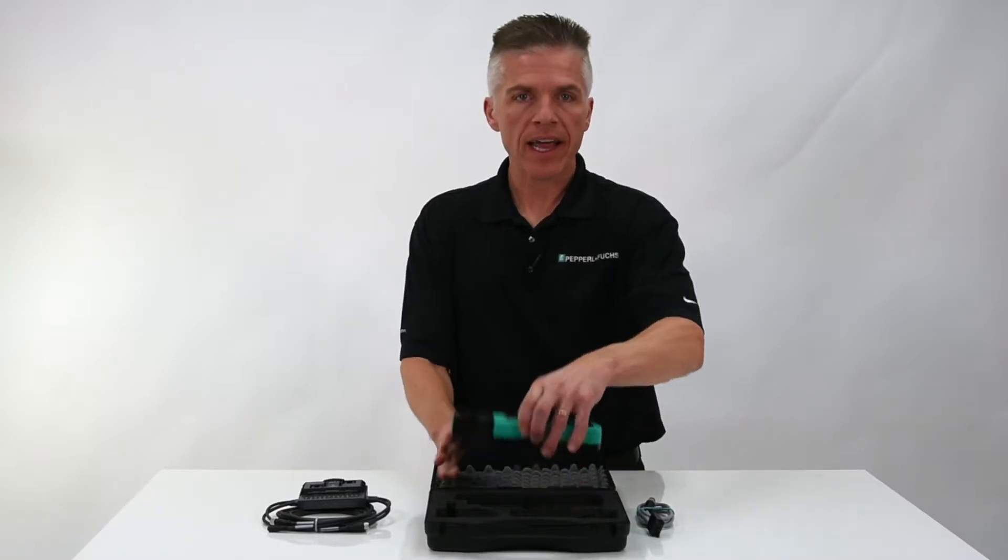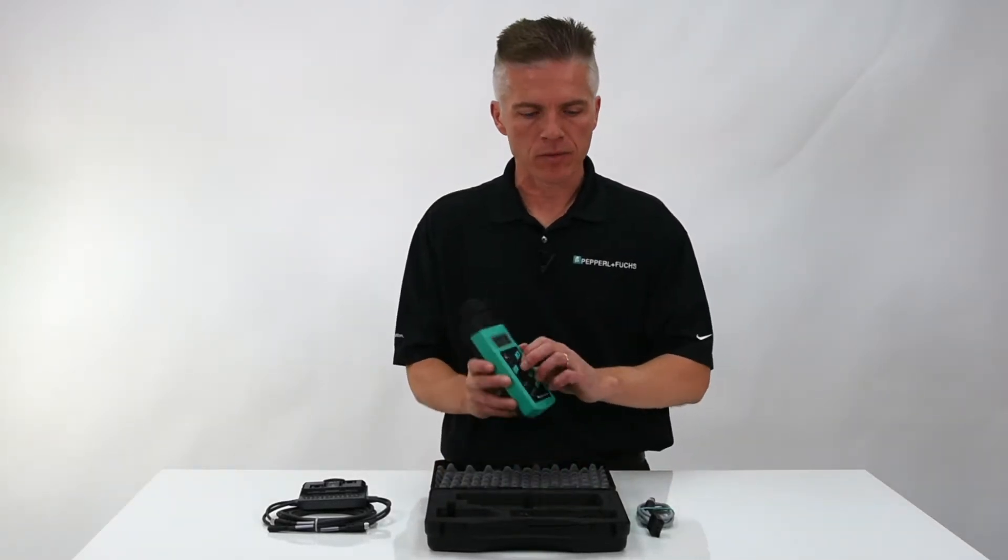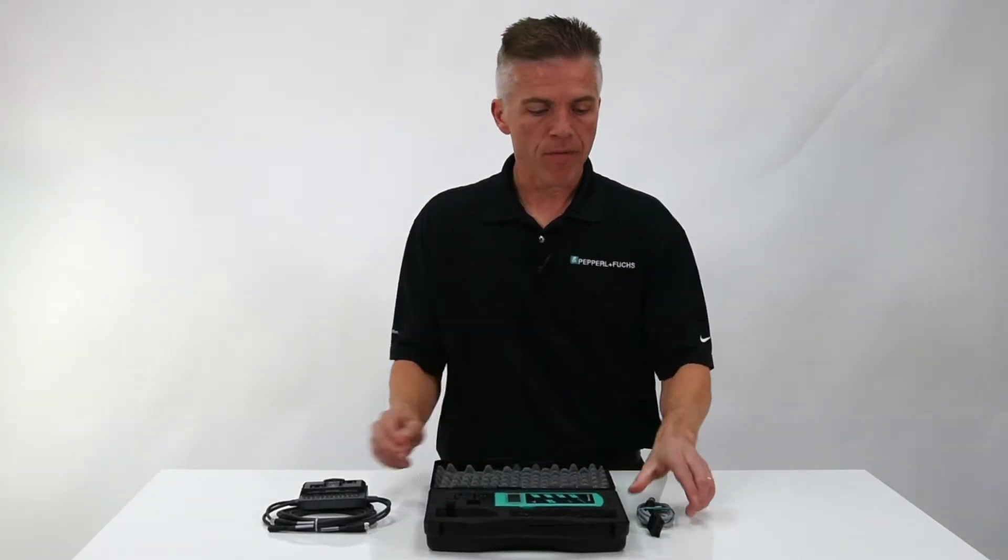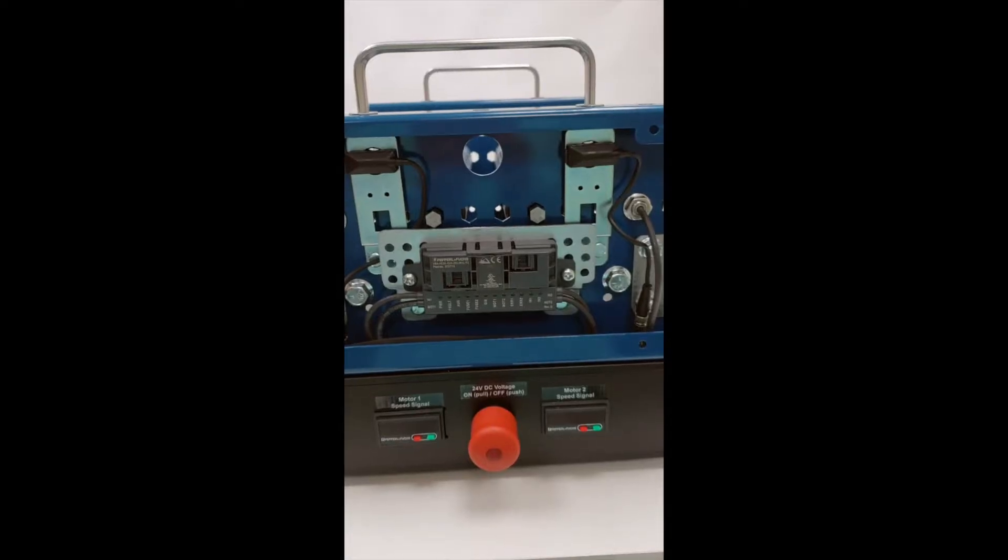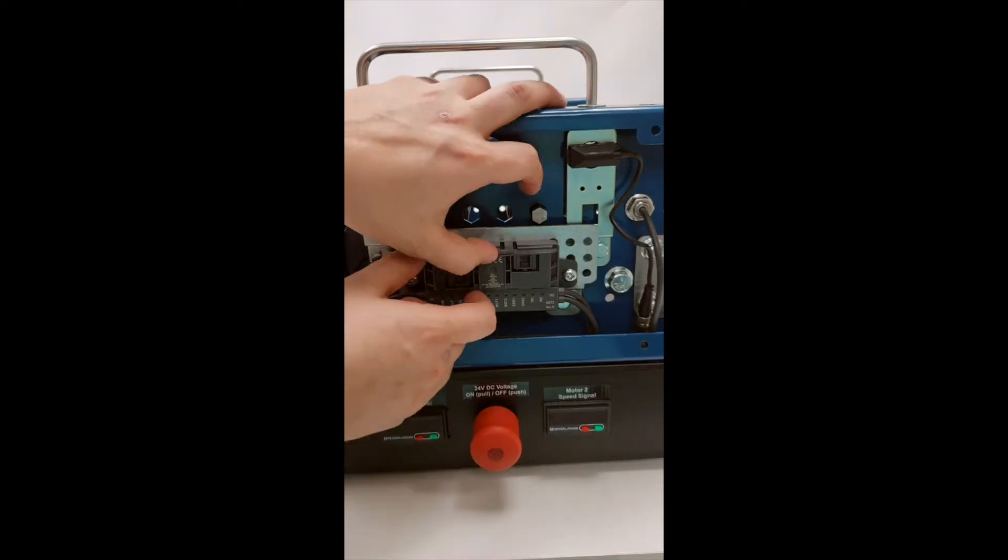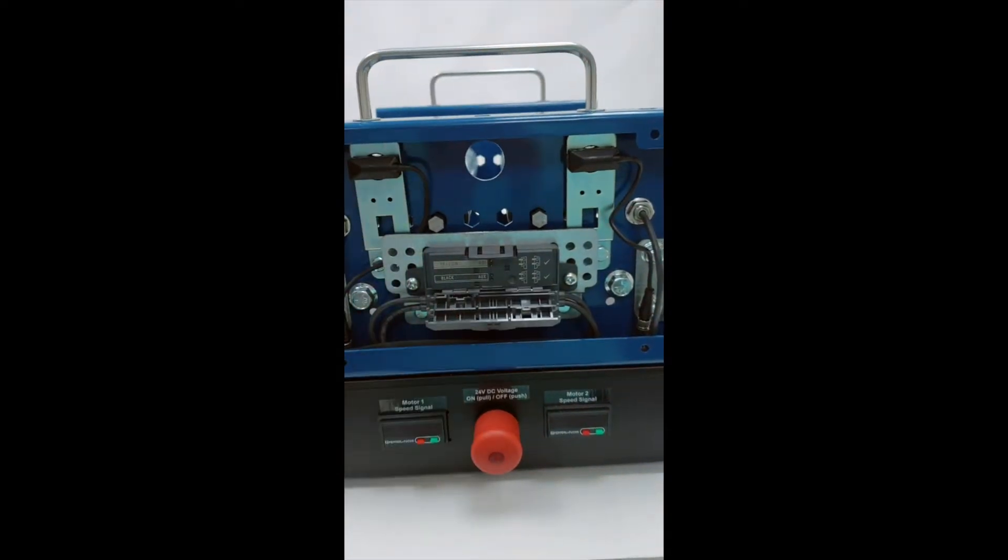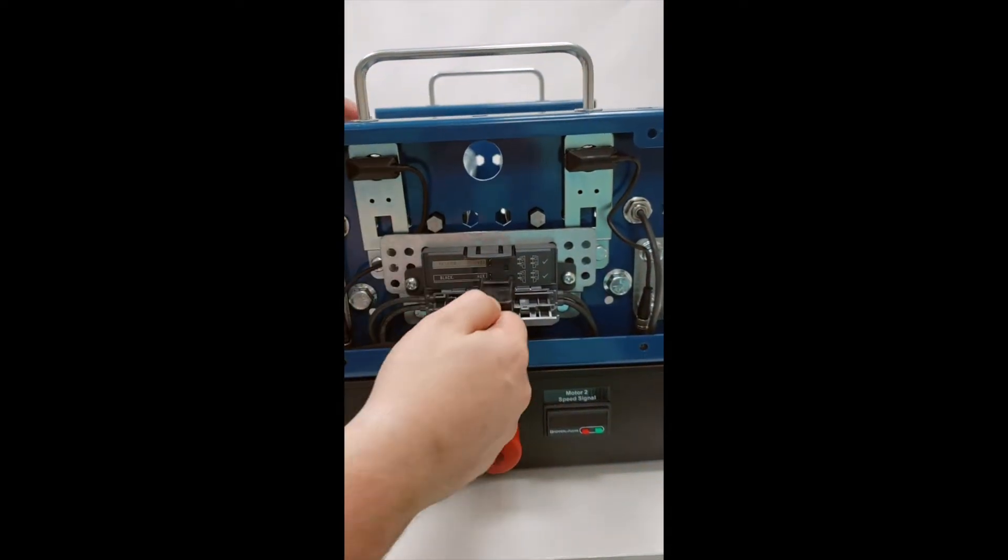Next, we need a handheld unit to address the module. And finally, we need a unique cable for addressing. Lift the cover on the G20 module and insert the adapter onto the AS interface piercing connectors.